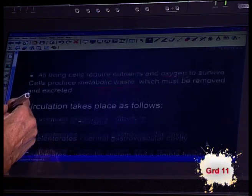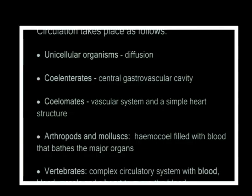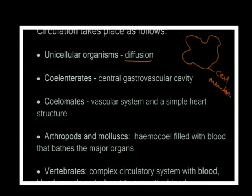In unicellular organisms we have pure diffusion. For example, a little amoeba is a single cell with a cell membrane and a nucleus. If it needed oxygen, the oxygen would simply diffuse into the cell, be metabolized by the mitochondria, and then out would come carbon dioxide - just pure simple diffusion from a higher concentration to a lower concentration.